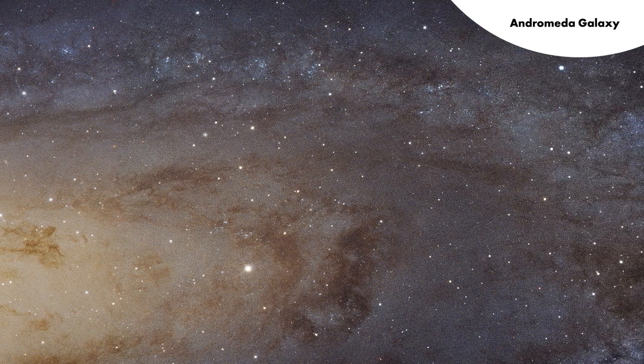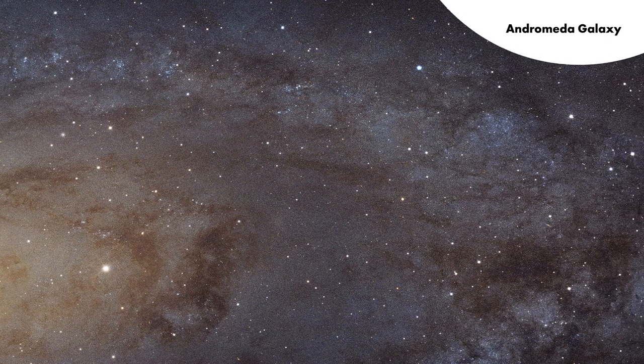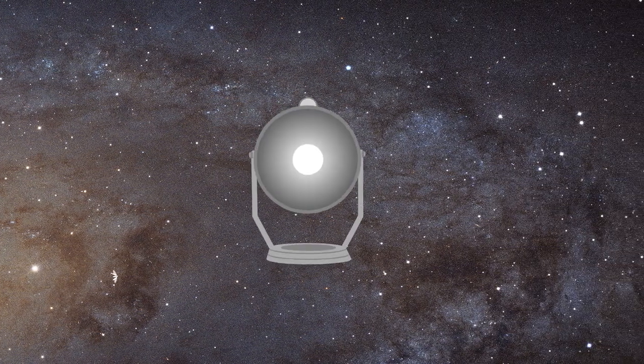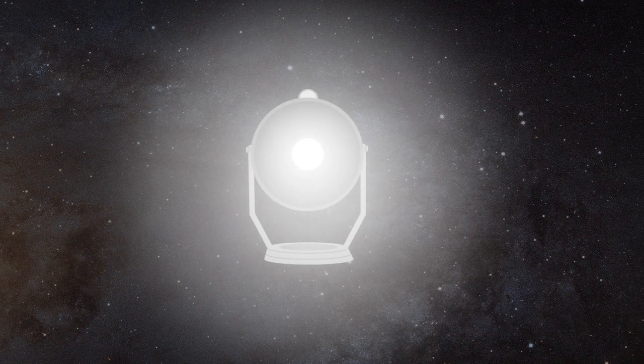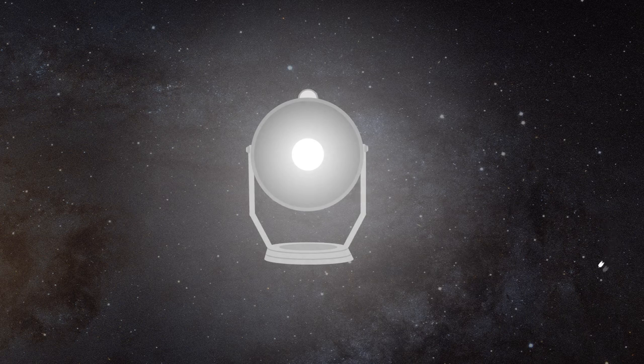Imagine if we were aliens looking at the Sun from far away. How would we know Earth was there? Earth is one trillion times fainter than the Sun, and very close to it. Try looking for a firefly next to a big searchlight, and you can understand the problem.